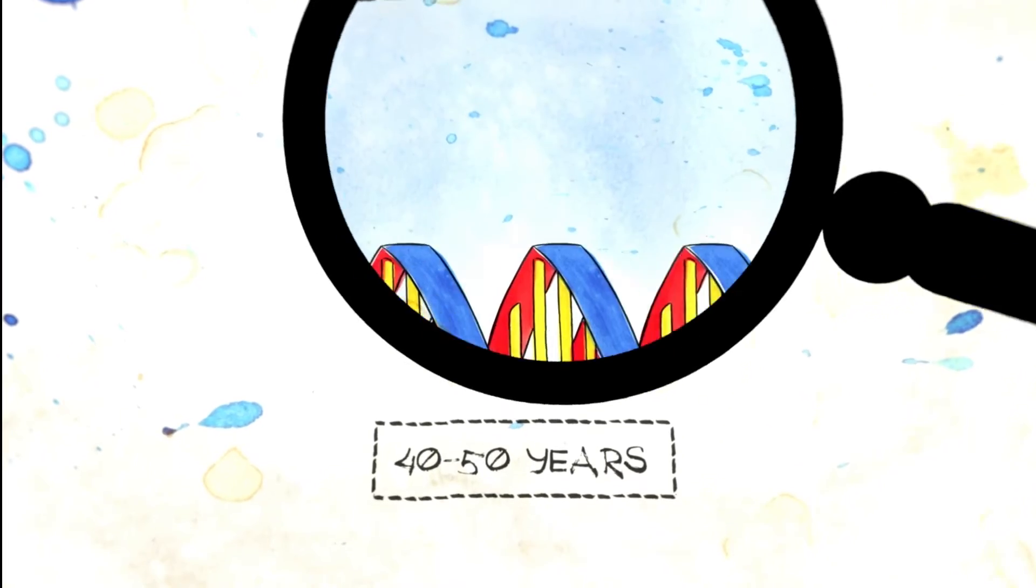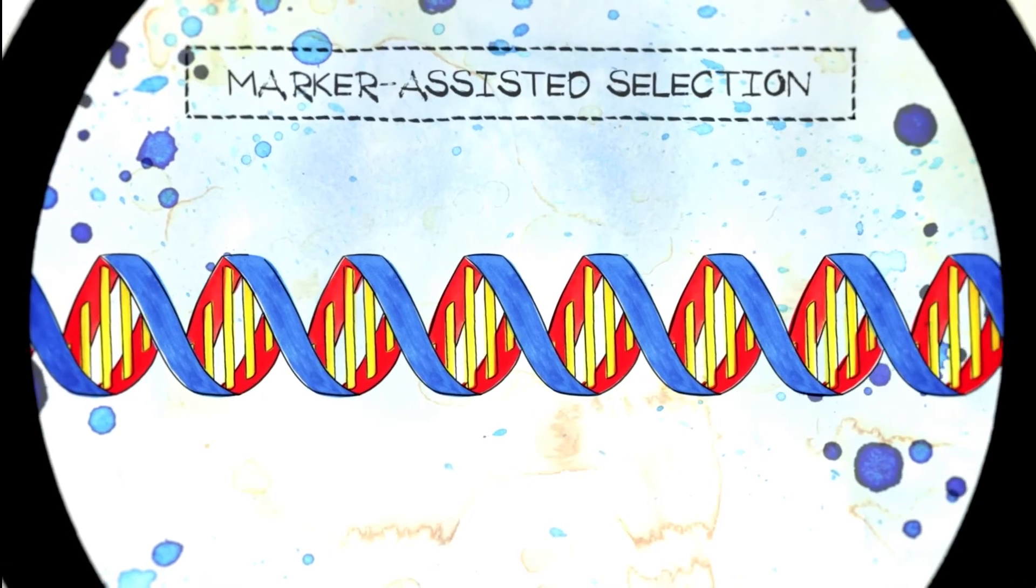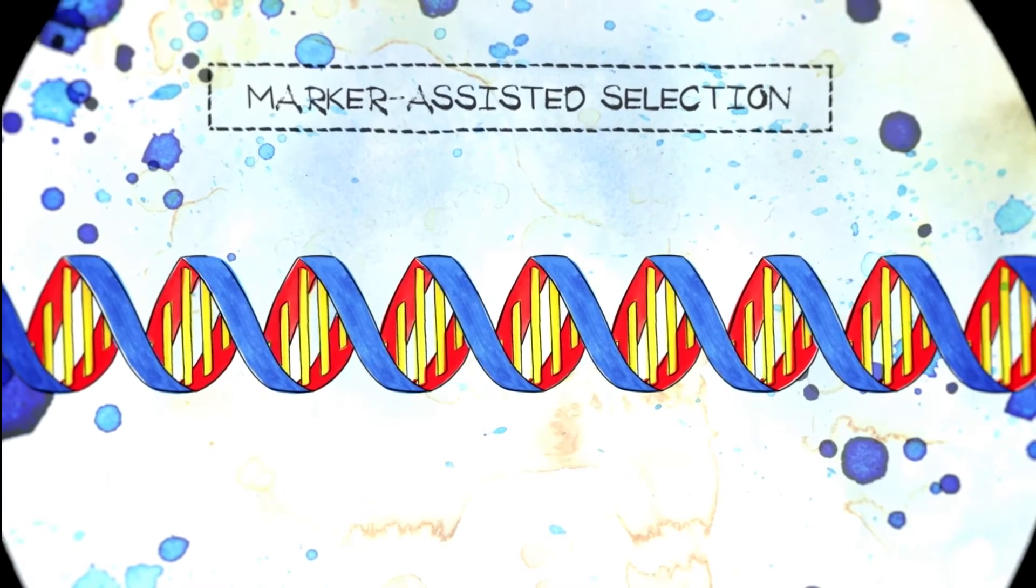Today, crossbreeding uses molecular biology tools called marker-assisted selection to help guide and speed up the process of selecting the best parents and traits.